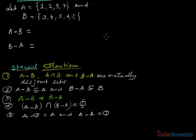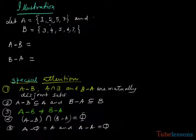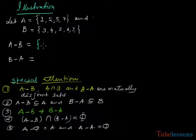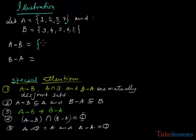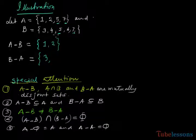Let us take elements. A contains {1, 2, 5, 7} and B contains {3, 4, 5, 6, 7}. Then A minus B: we exclude elements which are also in B, that is 5 and 7. So A minus B is {1, 2}. Similarly, B minus A: excluding 5 and 7, the elements left are {3, 4, 6}.